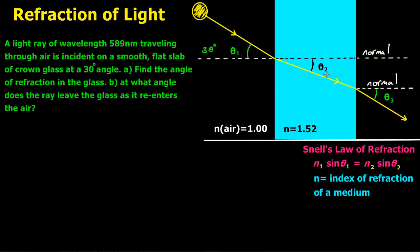For part B, as it leaves the crown glass and goes back to air, it is going to leave at a different angle from theta 2, so we need to find theta 3. For this kind of problem we're going to use Snell's Law of refraction: N1 times sine theta 1 equals N2 times sine theta 2. N is the index of refraction of the medium. The N of air equals 1.0, and the N of crown glass equals 1.52.